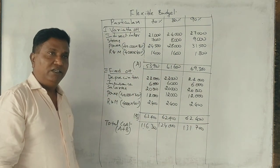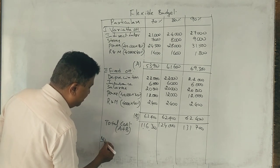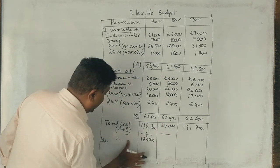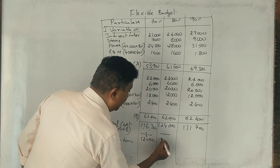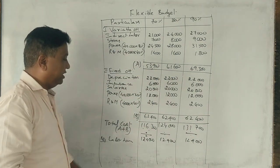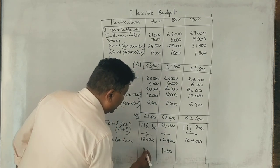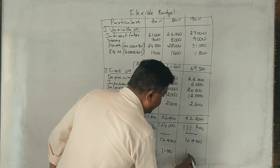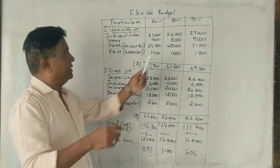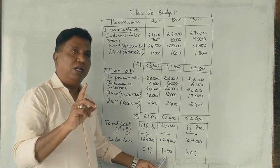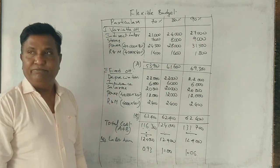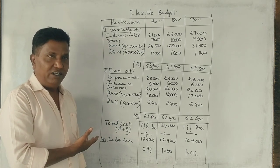Direct labor hours: 1,24,000. At 70%, this is 86,800 labor hours. At 90%, it's 1,11,600 hours. Cost per labor hour: 1,16,300 divided by 86,800 equals 1.34 at 70%. At 80% it's 1.00. At 90% it's 1.18. This is the number of labor hours. Easy. Thank you.